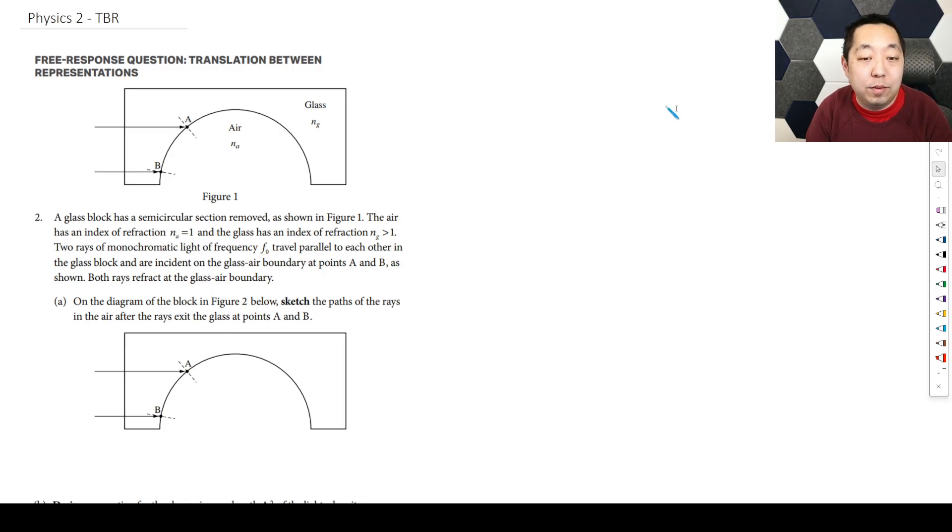Alright, so here's an example of the AP Physics 2 translation between representations. If you don't know what this question is about, this FRQ type which is new for the 2025 exam, go look at the AP Physics 1 where I break down the expectations and the translation between representations FRQ.